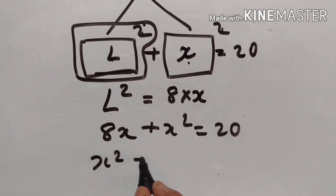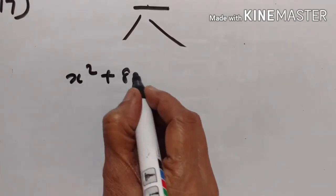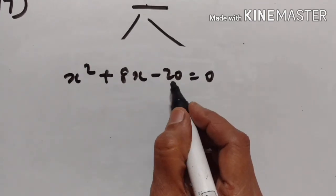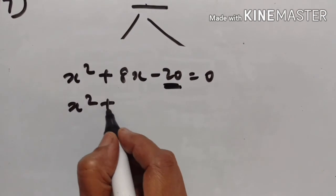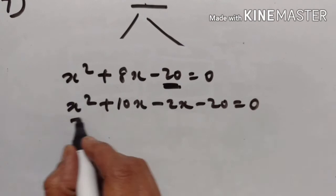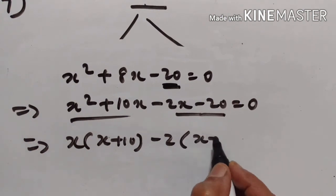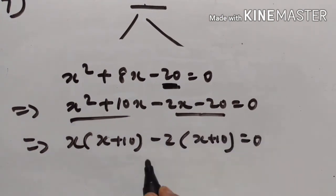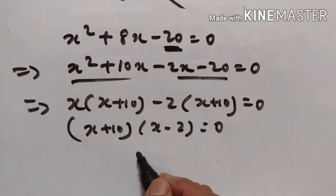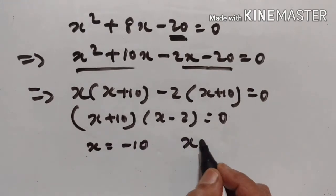Substituting L squared equals 8x: we get x squared plus 8x minus 20 equals zero. Factoring by splitting: x squared plus 10x minus 2x minus 20 equals zero, giving x(x plus 10) minus 2(x plus 10) equals zero, so (x plus 10)(x minus 2) equals zero.